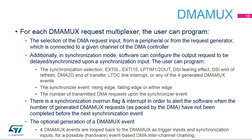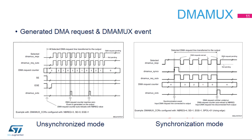As well as managing DMA requests, DMA MUX can also generate programmable DMA MUX events, which may be looped back as trigger inputs. For example, this would apply to transfers chaining between different DMA channels. In normal or unsynchronized mode, SE equals 0, DMA MUX is routing one selected input DMA request to one of its output DMA requests. On top of that, DMA MUX may be configured for generating an event — EGE equals 1. An event is generated every NBREQ plus 1 DMA requests.